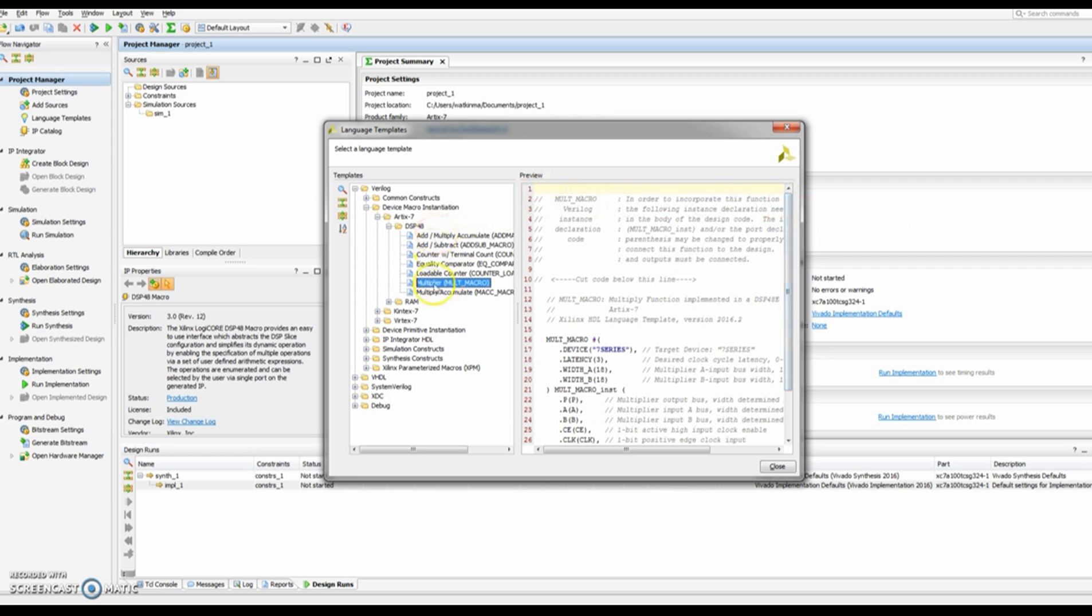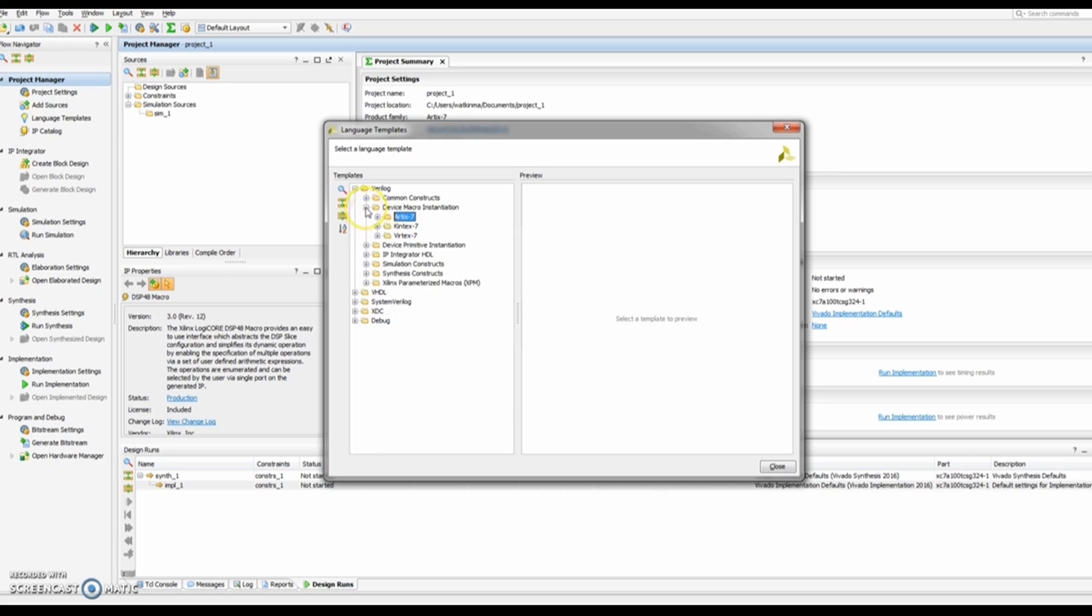There are also macros for other pieces of functionality that you can implement with the DSP blocks. For example you could implement an option that performs an addition or subtraction and there are some other options. And so that's where the macro options are.